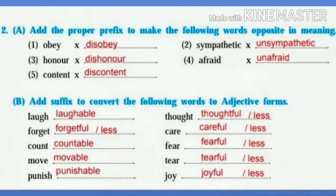The suffixes used are: -able, -less, and -ful (F-U-L-L). You can also use '-less' to make adjectives. For example: Careful becomes Careless, Fearful becomes Fearless, Thoughtful becomes Thoughtless. In this way you can use suffixes to convert words into adjective forms.